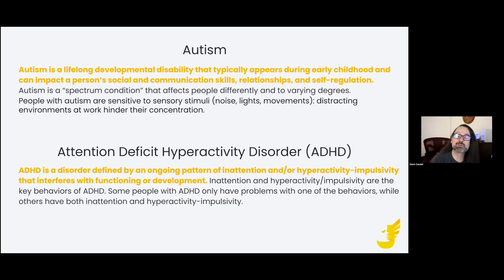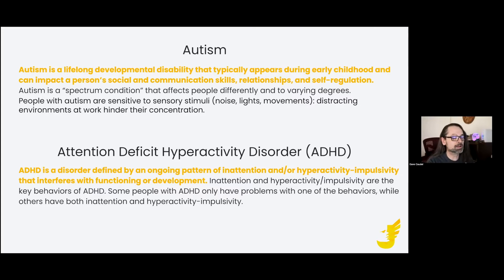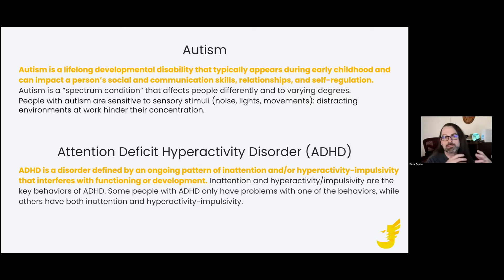There's a famous saying in the autism world: if you know one person with autism, you know one person with autism. That speaks to the fact that it's such a multivariable spectrum that you can have two people that are actually quite similar to each other, and yet their autistic symptoms might vary quite a bit. Some of the more common ones that might need accommodations in the workplace include sensitivity to sensory stimuli such as noise, lights, and movements, which can make environments very distracting and hinder concentration at work.